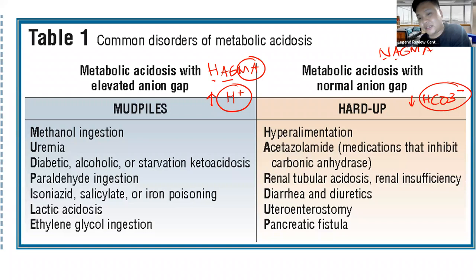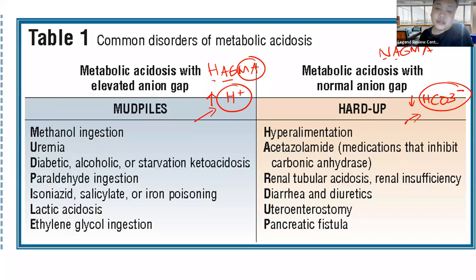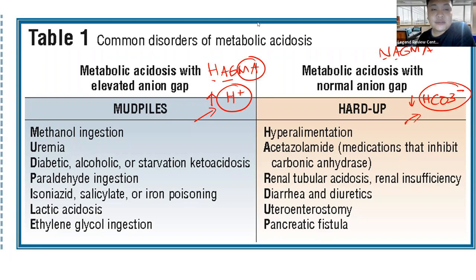The causes of HAGMA and NAGMA are enumerated in the table — these haven't been specifically asked in boards yet, but better to be prepared. Just remember: HAGMA is caused by introduction of more acid; NAGMA is caused by a decrease in bicarbonate. The acid-base disorder that requires the anion gap for categorization is metabolic acidosis.